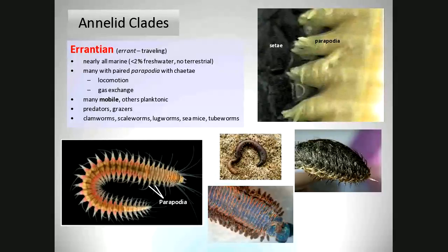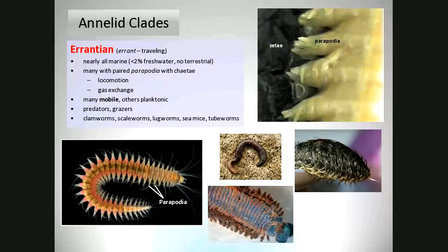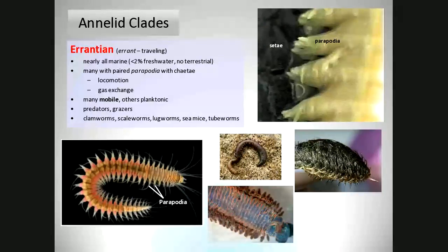A lot of members of this group are mobile, some are drifters, some are planktonic, and they engage in a wide variety of food-obtaining techniques — predators and grazers. They're always easy to tell because they're segmented with large appendages sticking out the sides. Lugworms also fit in this group, though their appendages are a little less pronounced — you can see little lumps.